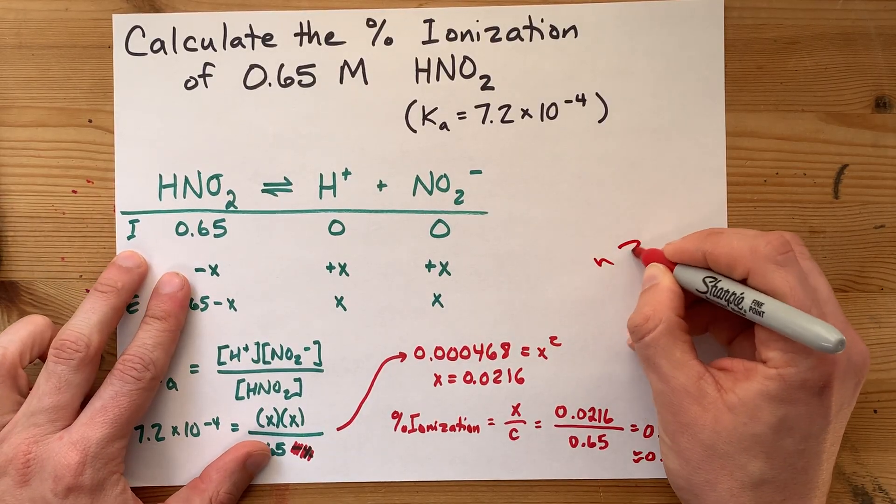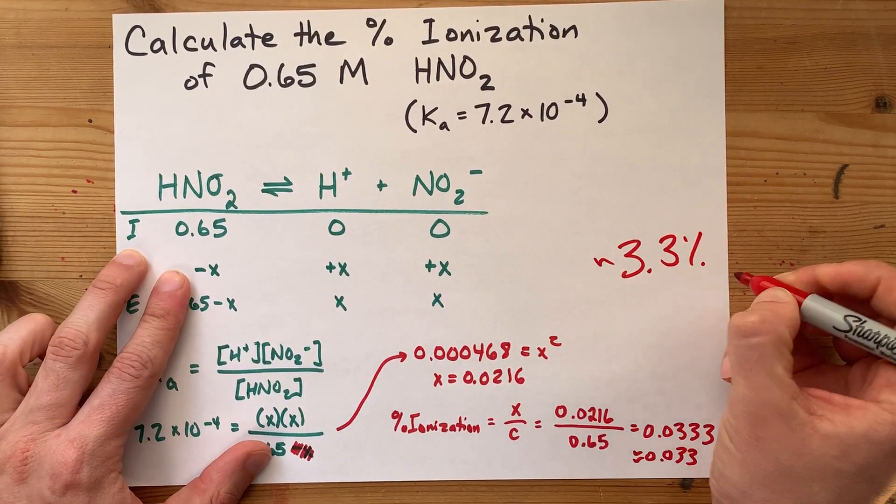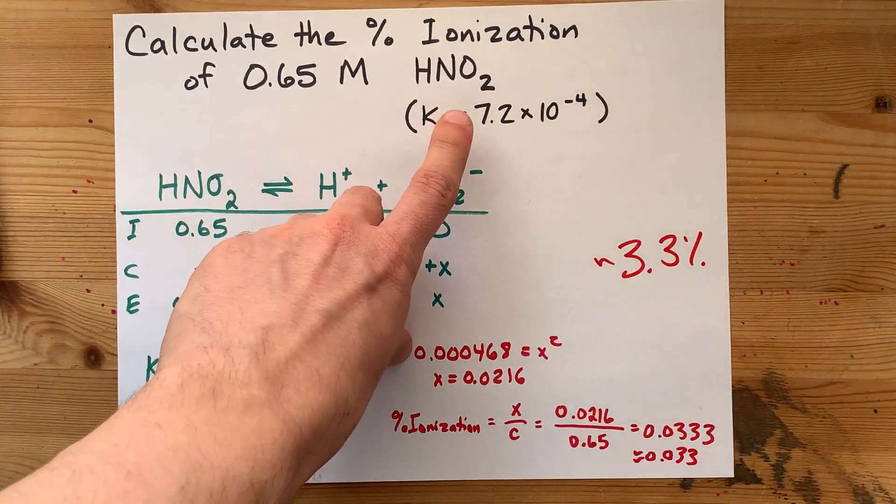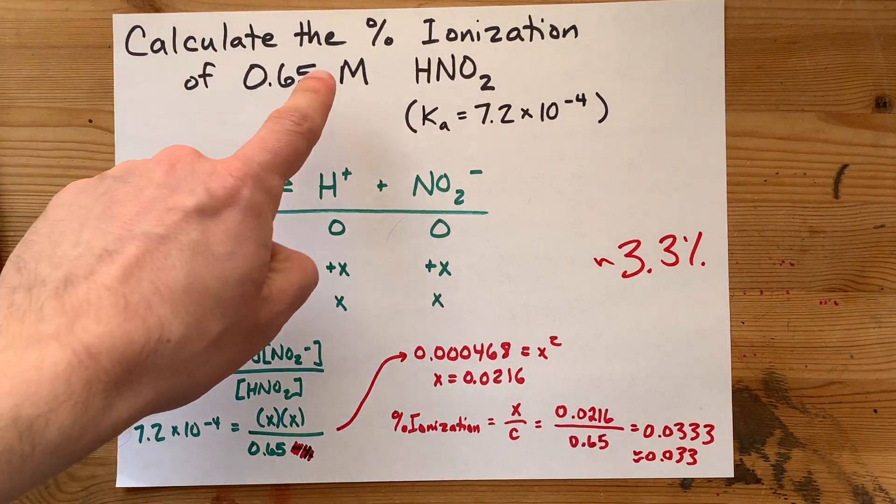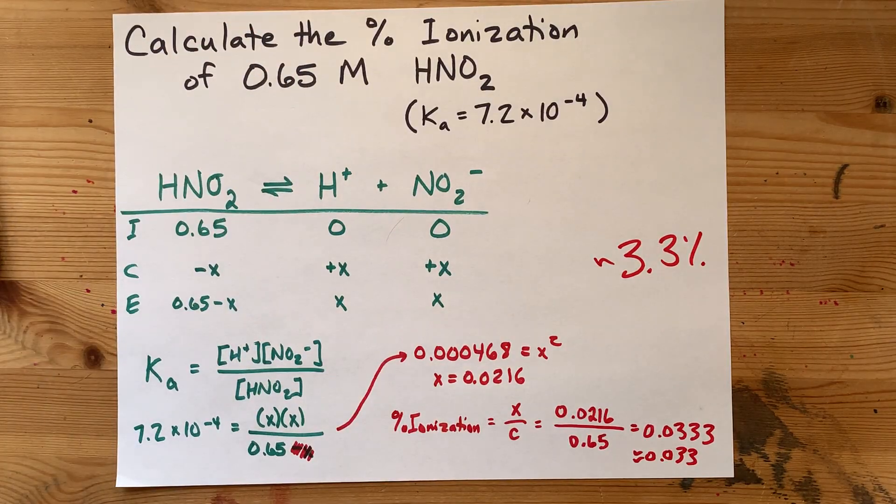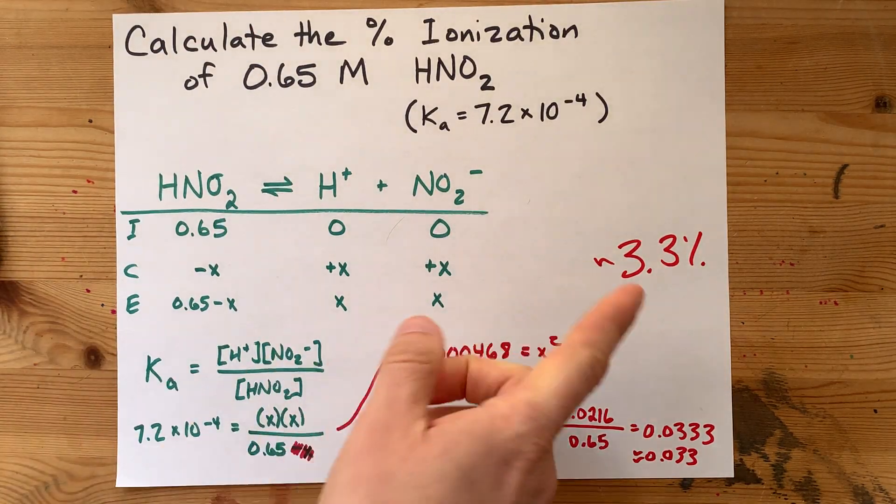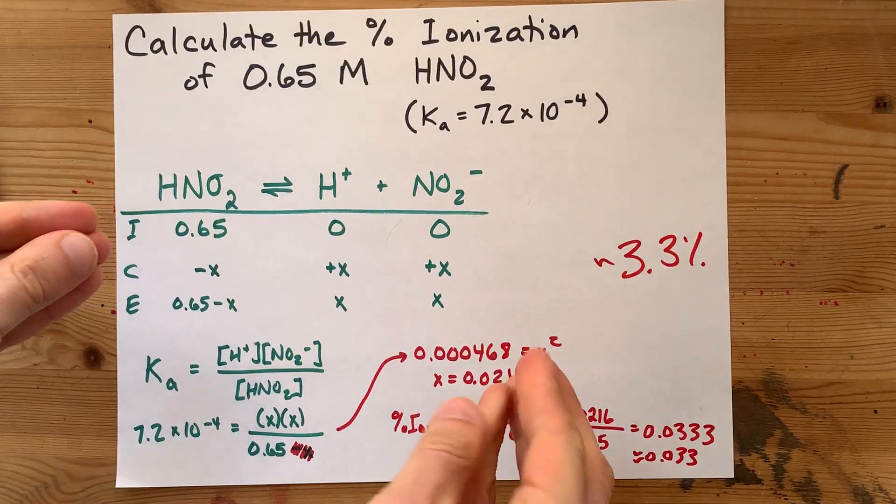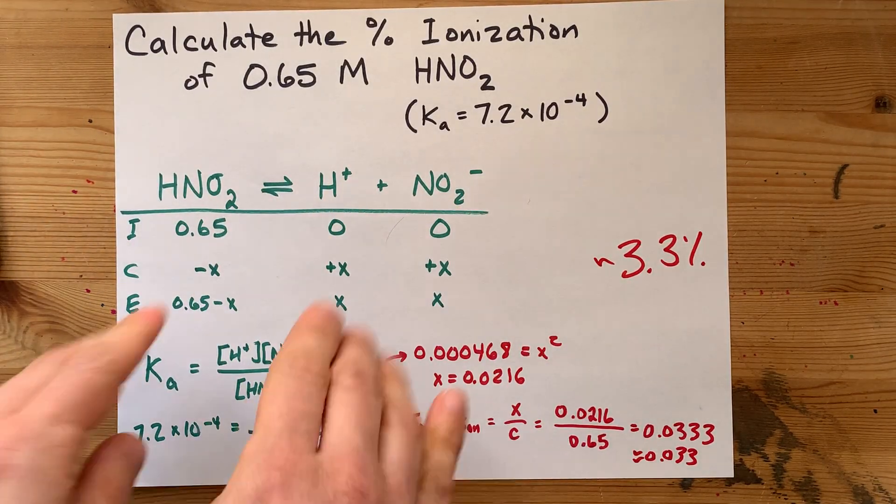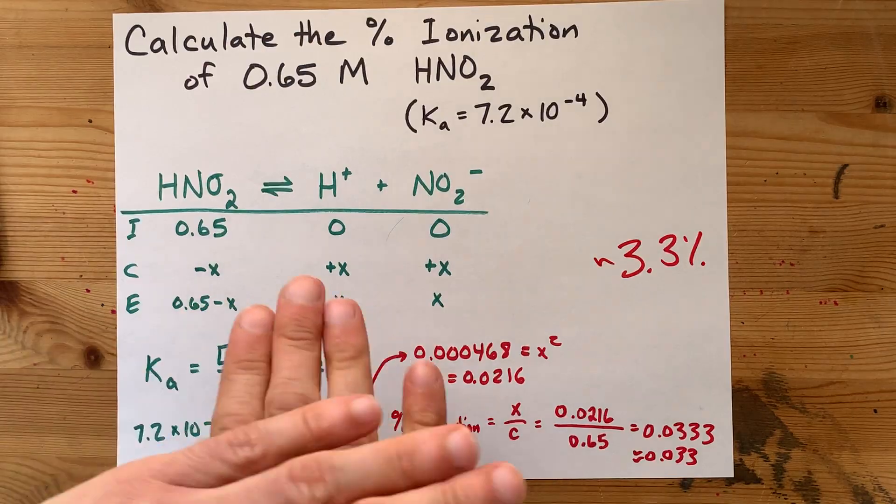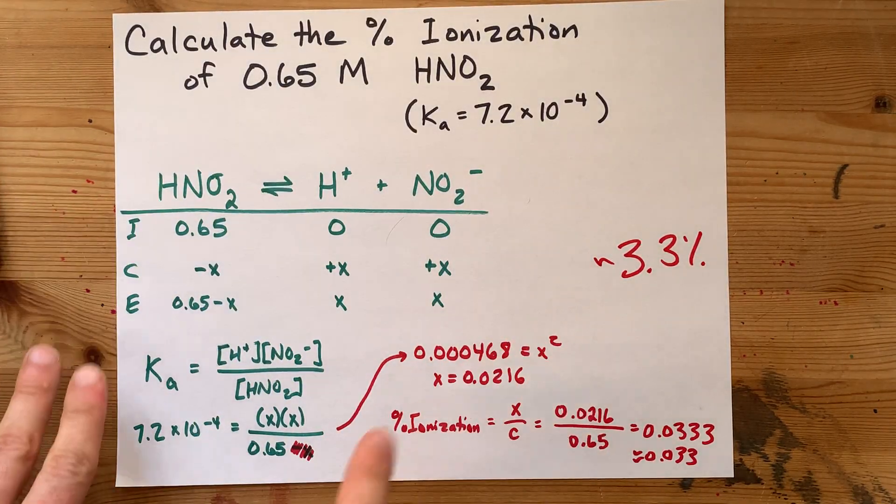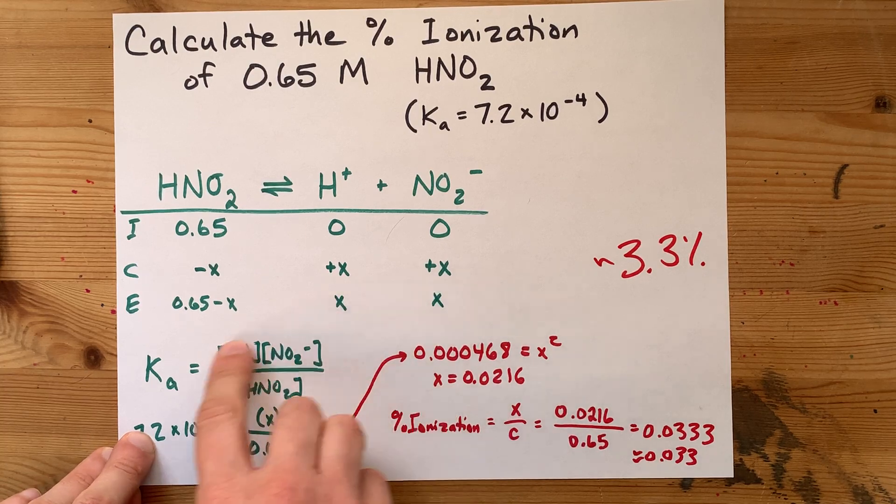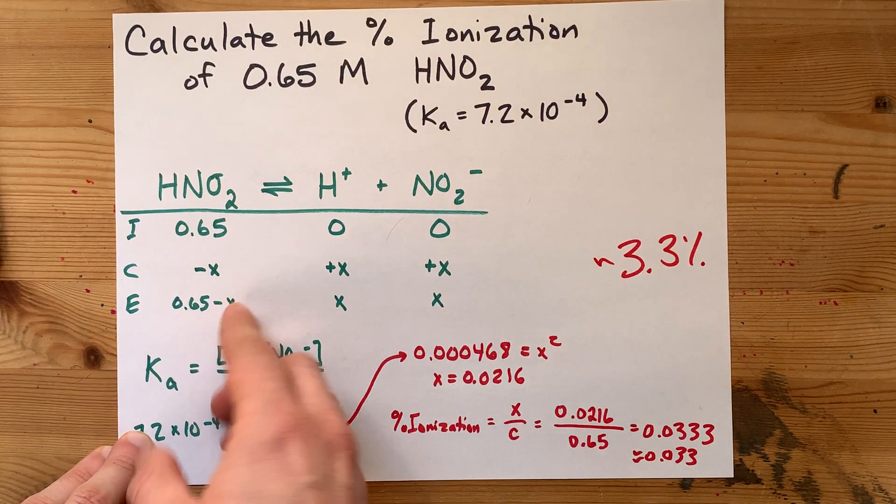...at a concentration of 0.65 moles per liter, about 3.3% of it will dissociate to make H pluses and NO2 minuses. If you're asked for percent ionization, you were not asked for pH or anything like that. You're just looking for what fraction of the original 0.65 broke apart.